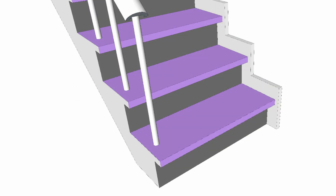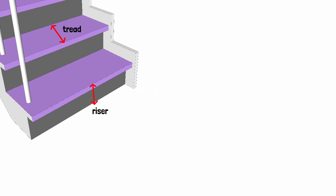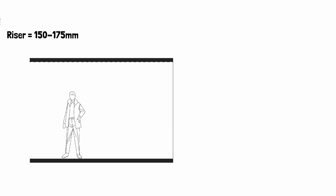Riser and Tread: The tread is the horizontal part of the step and the riser is the vertical part. Standard riser height can be taken from 150 mm to 175 mm. Above 175 mm, it will be uncomfortable for the user.